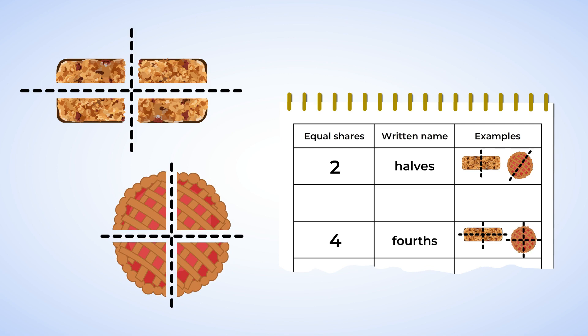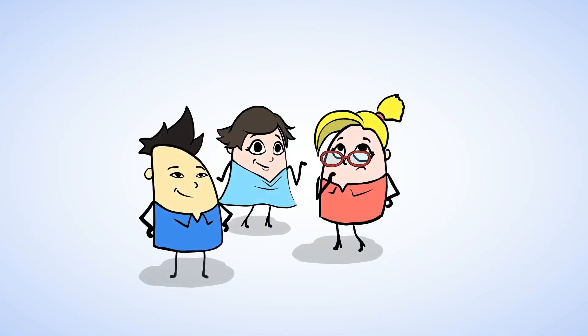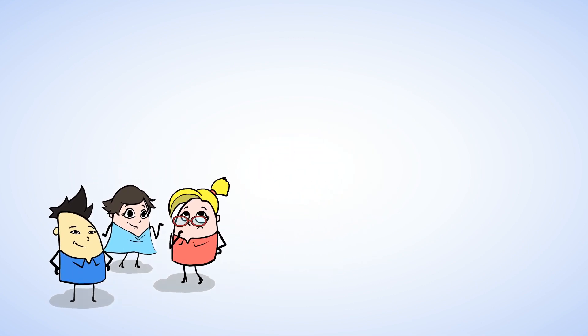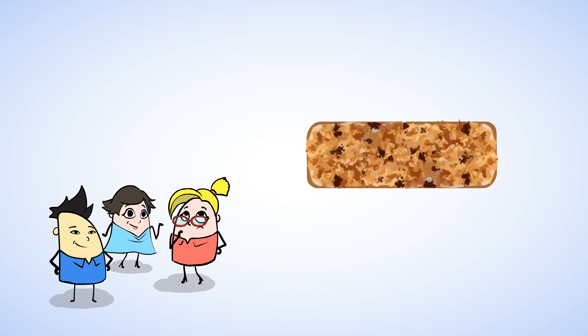We've split a granola bar and a pie into halves for two friends, and into fourths for four friends. But what do we do if three friends come in? How would we make equal shares then? Well, let's give it a try.